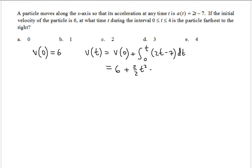And then minus 7t. The constant does not need to be added separately because we already have the 6, and again evaluating from zero to t doesn't change the result. So the velocity function is t squared minus 7t plus 6.